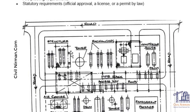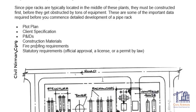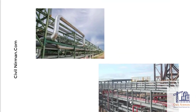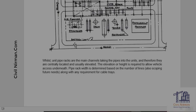Another consideration is construction material - whether the pipe rack will be of concrete or steel. Sometimes hybrid pipe racks are also constructed, meaning up to a certain height the pipe rack is concrete and above that it is steel. Generally for hybrid pipe racks, the pipe-carrying tiers are of concrete, and only the structure on top for cable trays is of steel.